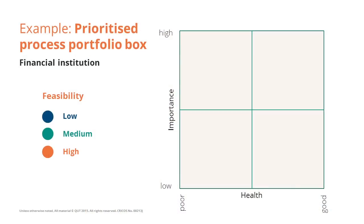A prioritised process portfolio is a peak chart where we choose two dimensions, such as health and importance. Based on the degree of health and importance, we identify four different quadrants. For example, the bottom left quadrant is for processes that have poor health and low importance, whereas the top right quadrant is for processes that have a good level of health and are very important. We can place processes as circles in the peak chart according to how they rank along these two dimensions, and further colour code each circle on the basis of the degree of feasibility.